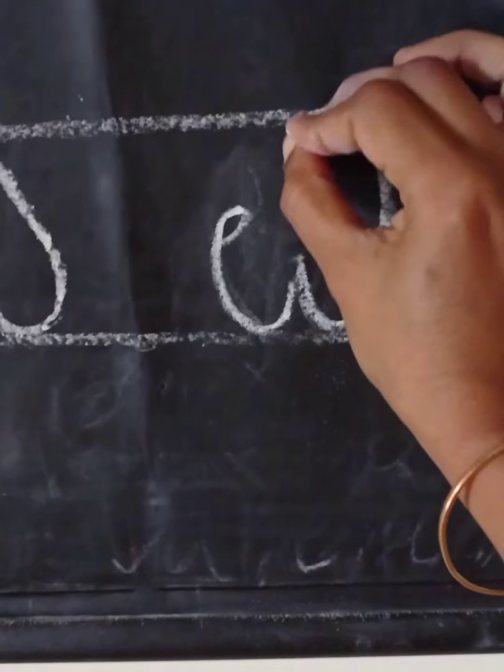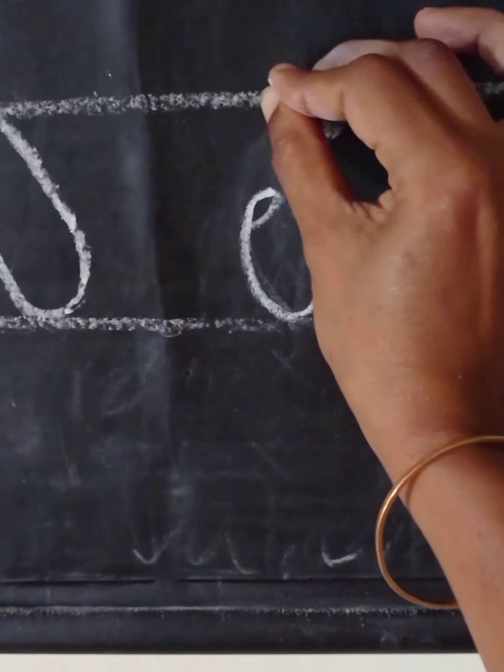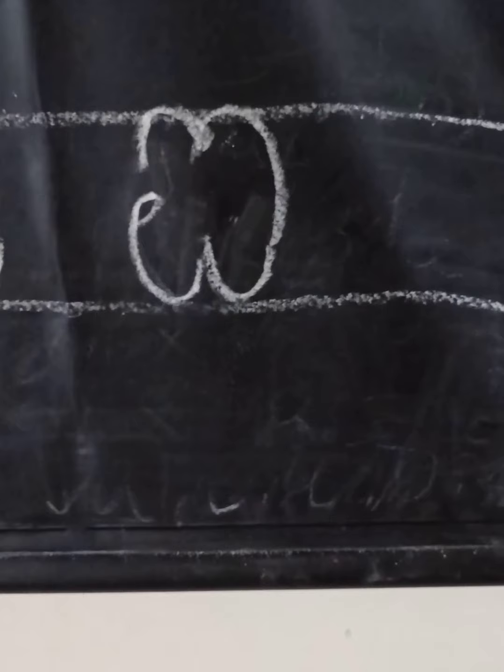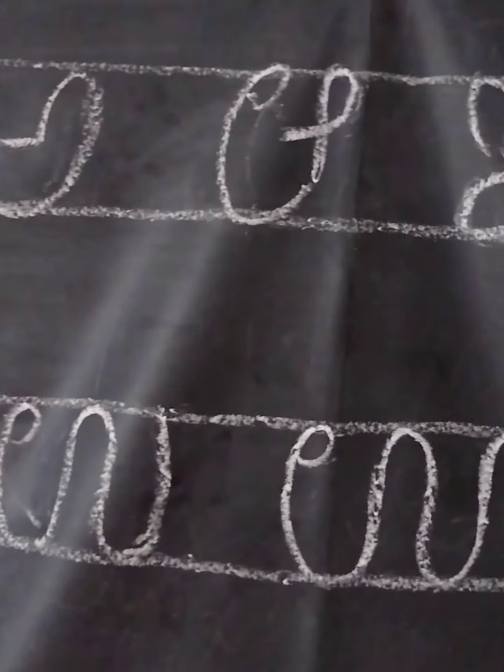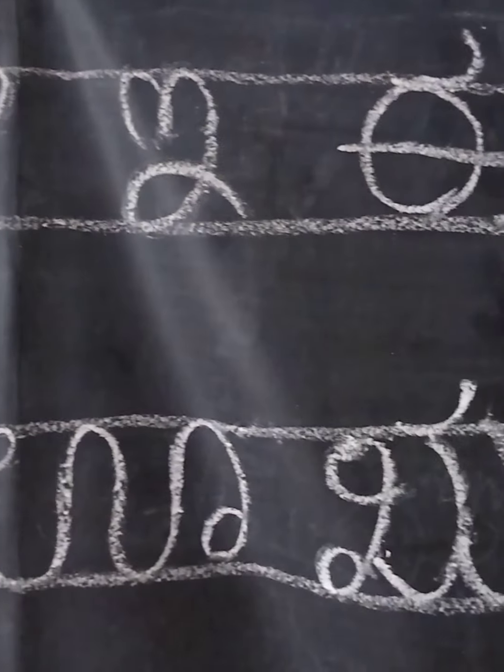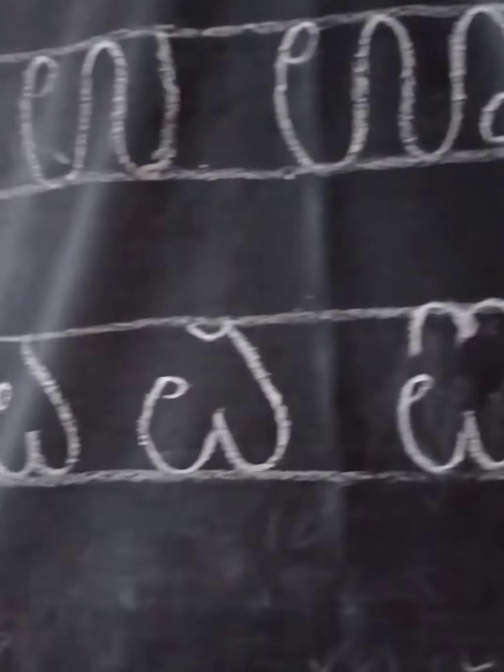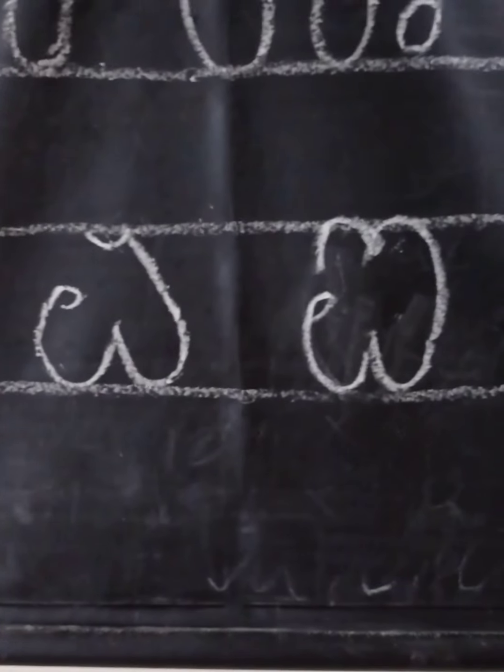These three letters are a bit similar to each other. This is I. So we have A, Ā, I, E, U, Ū, Ru, Ye, and I.